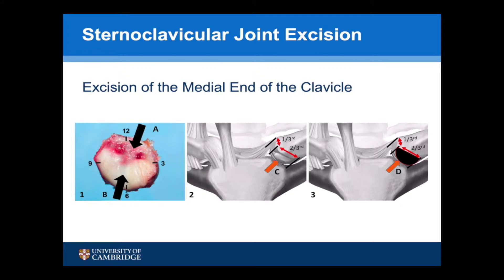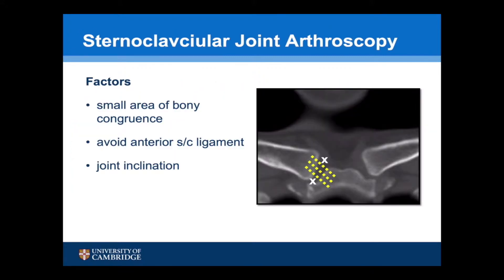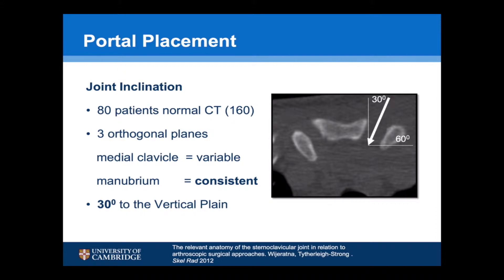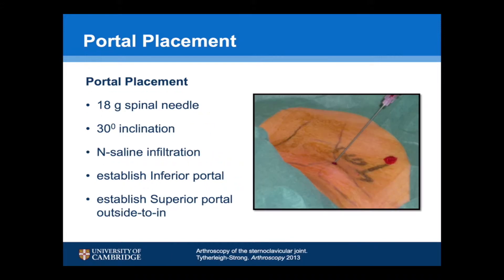This is something that lends itself very nicely to an arthroscopic procedure. There's only a small area of bony congruence, and the portals must come in from the anterior surface — so it's important to avoid the anterior sternoclavicular joint ligament. The portals therefore need to be at the inferior and superior points of the joint. Another important factor is joint inclination. We undertook an axial CT study and found that rather than being perpendicular to the plane of the chest, the inclination of the sternal side of the joint is consistently at 30 degrees to the vertical plane. Taking these factors into account, an inferior port is established first using a spinal needle at the inferior aspect of the joint, angled at 30 degrees to the vertical plane.